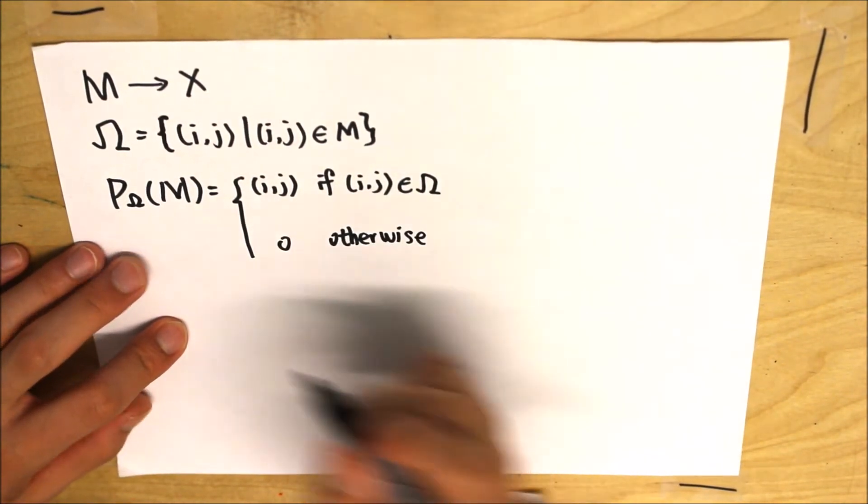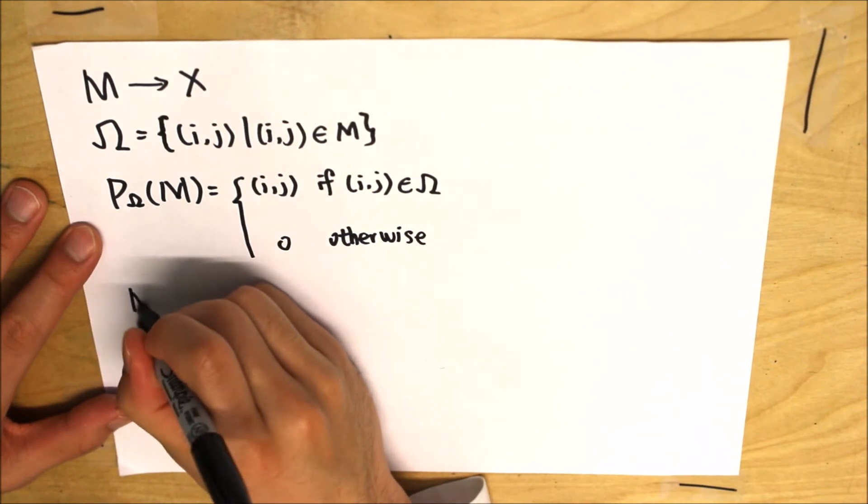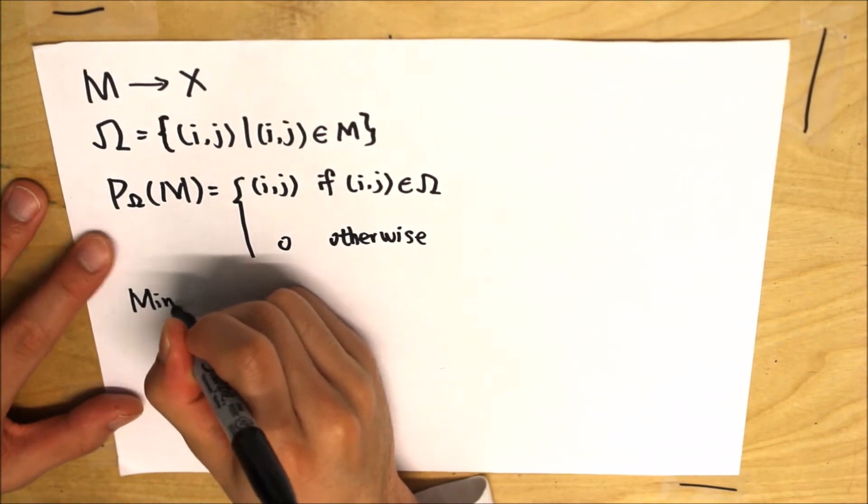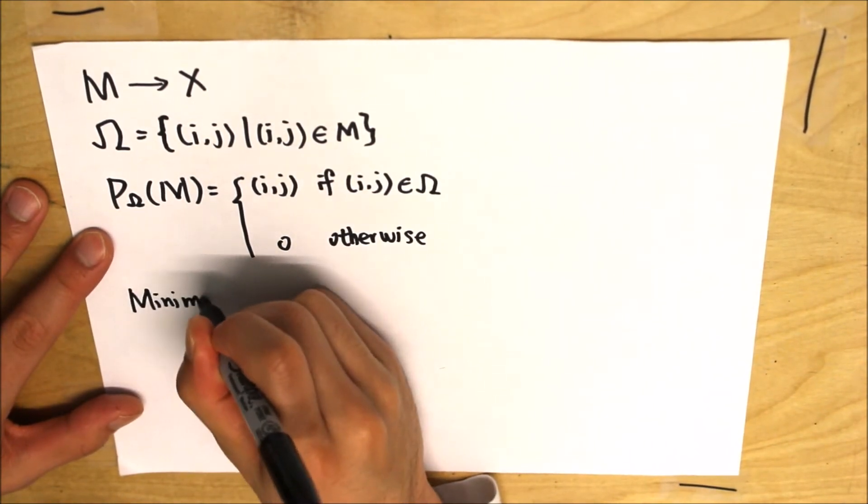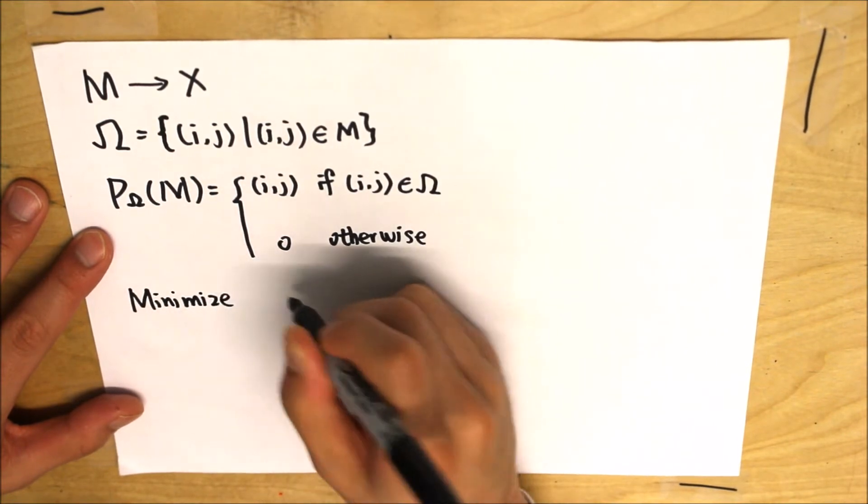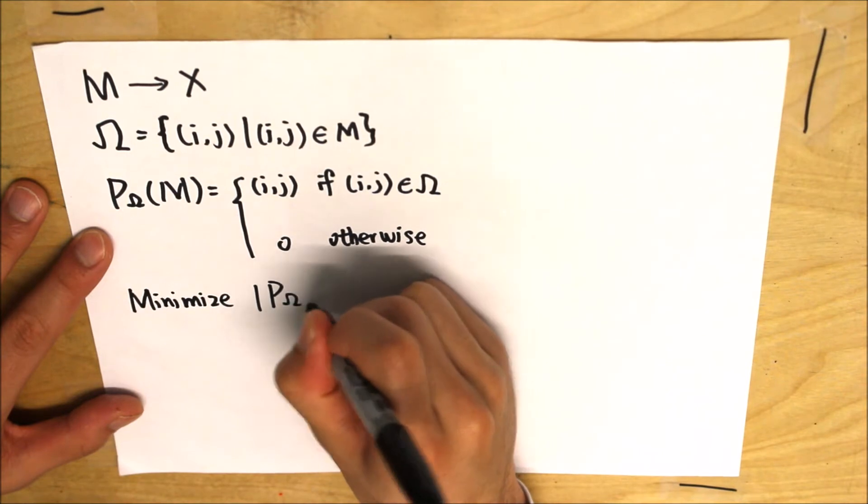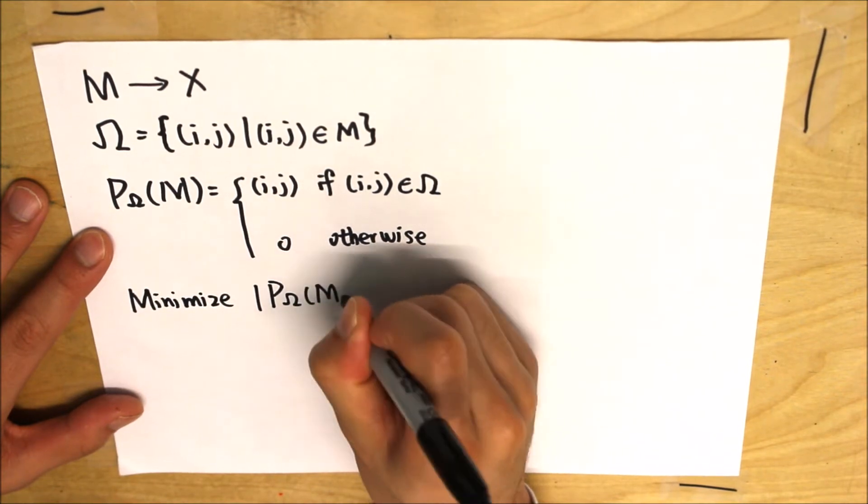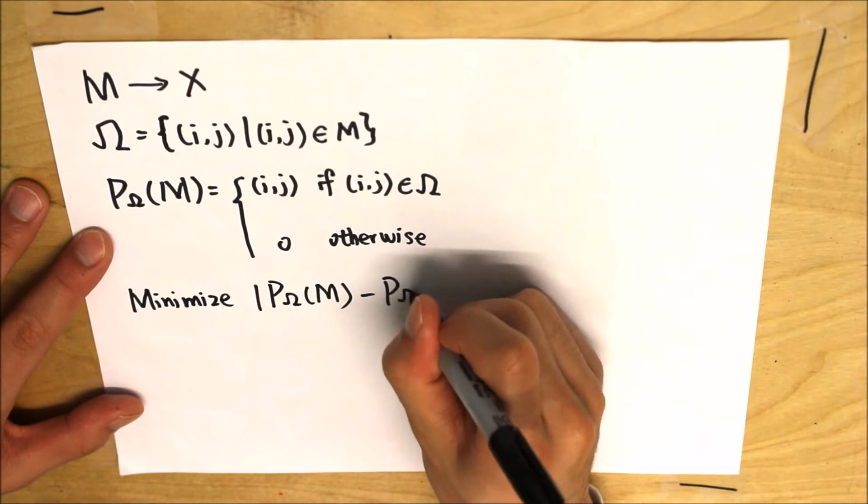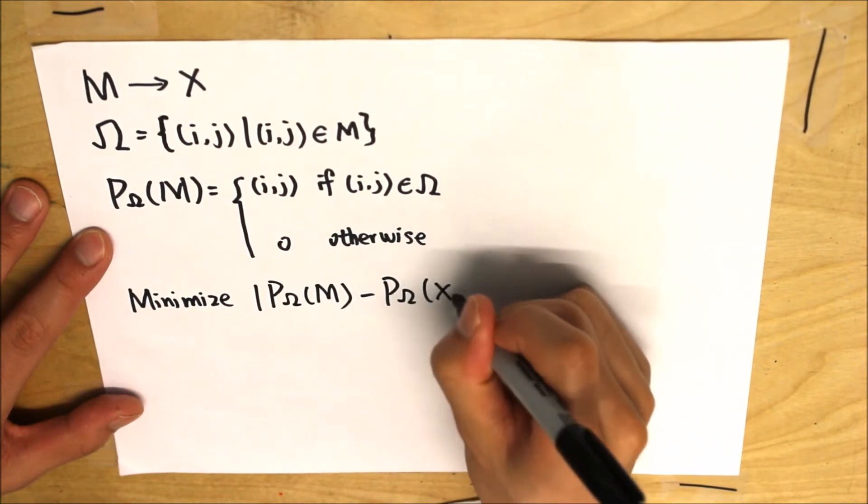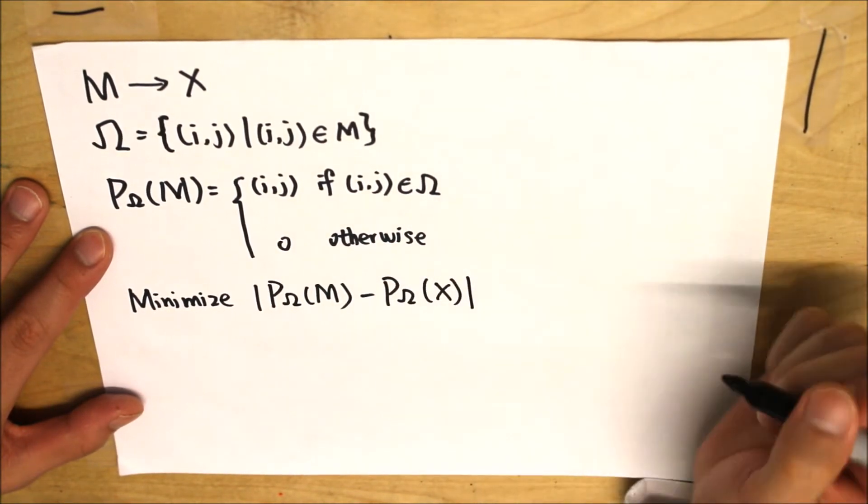When filling the missing entries in M, we want to match the entries of X with the given matrix as closely as possible. More formally speaking, we want to minimize the difference between our prediction and the data we are given. Ideally, we want the difference to be zero, but since real data is always noisy, and a perfect fit of data will very likely lead to overfitting, in reality, we choose to minimize the Frobenius norm instead.